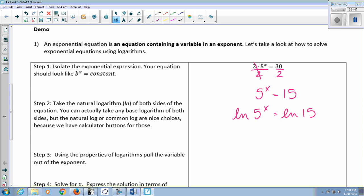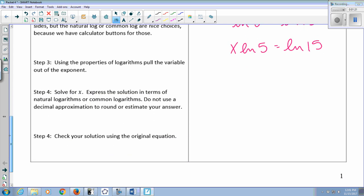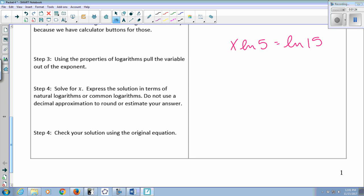Use the property of logs that lets you take the x in the exponent and bring it down in front. So this says x times the ln of 5 equals the ln of 15. Now you just have to remember that ln of 5 and ln of 15 are just numbers. You could type those in your calculator and it would give you a constant, a number. So if I want to get x by itself, this says x times the ln of 5, where the ln of 5 is just a number. So to get x by itself I'm going to divide both sides by the ln of 5. Those cancel, and you get x equals ln of 15 over ln of 5.